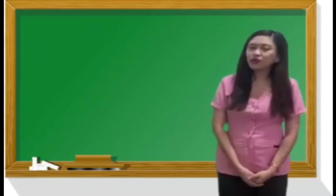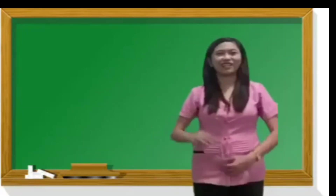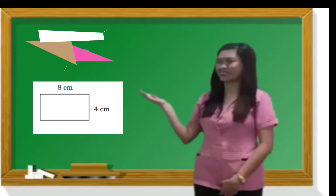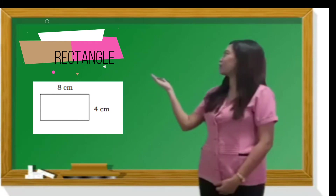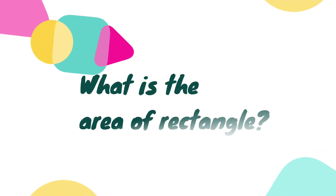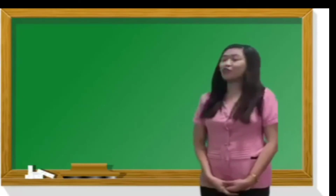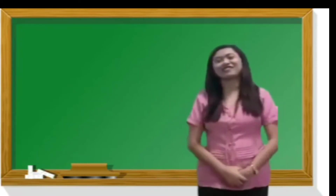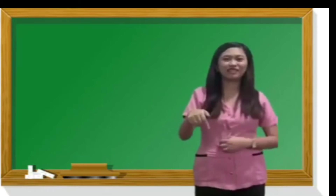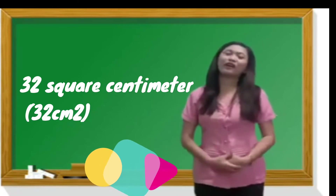I'm going to show you some figures and I want you to find the area. Look at the board. This is a rectangle. The length is 8 centimeters and the width is 4 centimeters. What is the area of the rectangle? To compute the area of a rectangle, we multiply the length and width. The formula is: Area = Length × Width. The answer is 32 square centimeters.